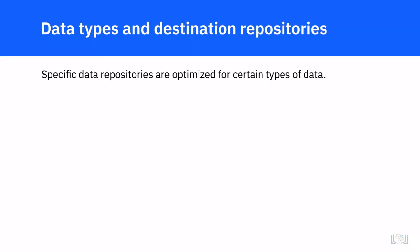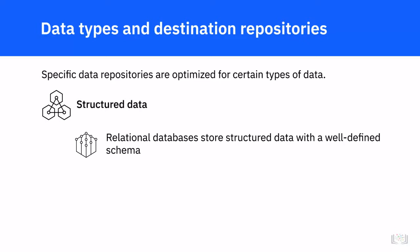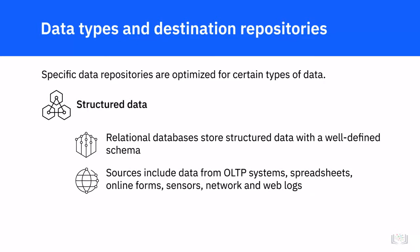Specific data repositories are optimized for certain types of data. Relational databases store structured data with a well-defined schema. If you're using a relational database as the destination system, you will only be able to store structured data, such as data from OLTP systems, spreadsheets, online forms, sensors, and network and web logs. Structured data can also be stored in NoSQL.